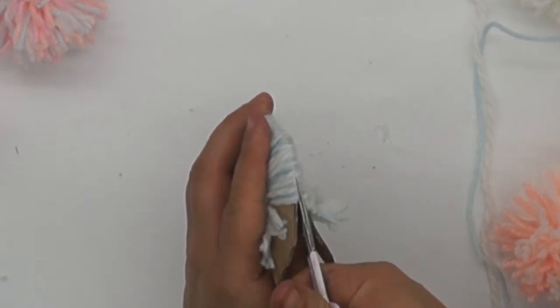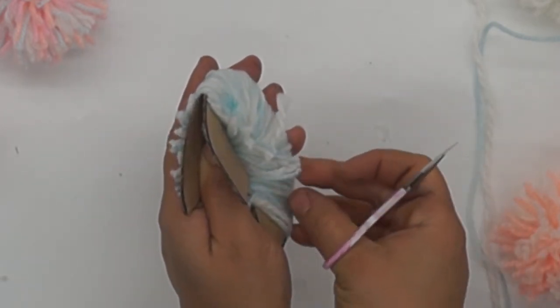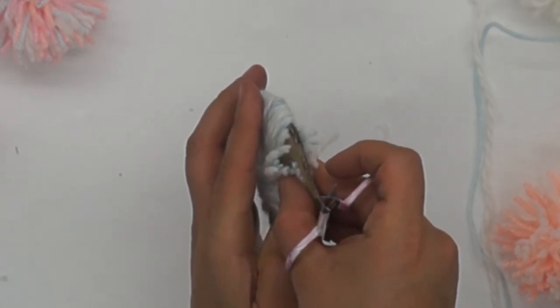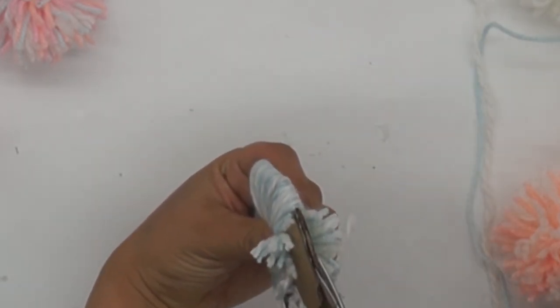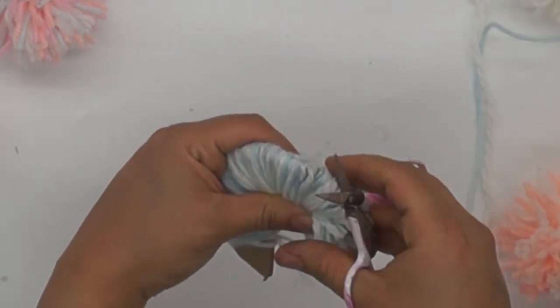What you need to do is open it very slightly and you're going to cut all the way along. Now when you're doing this bit, it's a bit fiddly. You need to make sure you hold it into place so it doesn't fall apart, and you just want to cut all the way around.